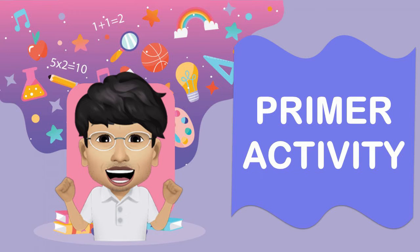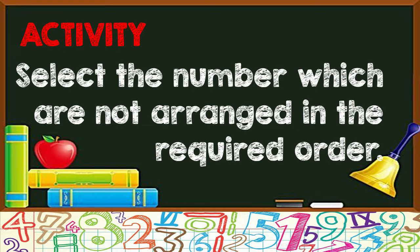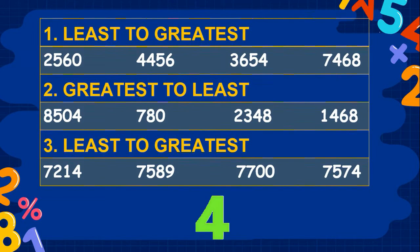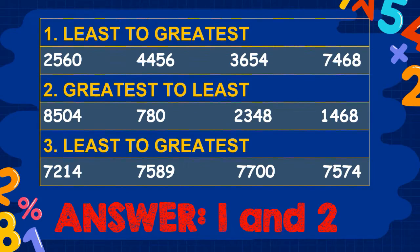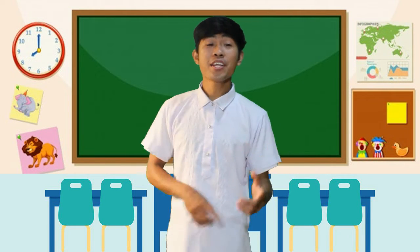Before we start, let's have a preliminary activity. For our activity, select the numbers which are not arranged in the required order. I'll give you 10 seconds to answer. Correct! It is numbers 1 and 2.